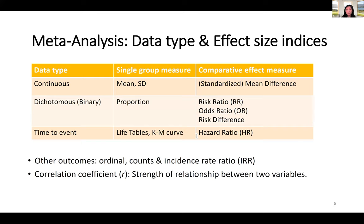Now we will direct our focus to meta-analysis techniques, starting with data types and effect size indices. There are two most common data types: continuous and binary. For continuous data, the summary statistics are mean and standard deviation, and when comparing two groups we use mean difference or standardized mean difference. For binary outcomes, we use proportions to summarize the data, and for comparative summaries we have risk ratio, odds ratio, and risk difference — all very common effect size indices for binary outcomes.